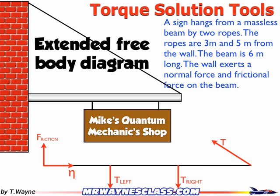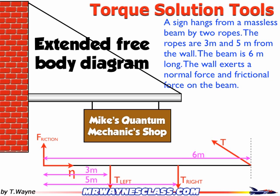What makes this different from a free body diagram is that I'm going to add distances with each force. The first distance is 3 meters, going to the tension on the left. The tension on the right is 5 meters away. And the tension at the end of the cable is 6 meters from the left. So with each force there's also a distance drawn starting from some location. The friction and normal force don't have a distance because they're at the location I'm using as my starting point.